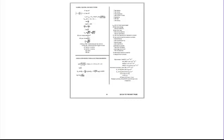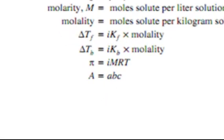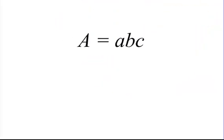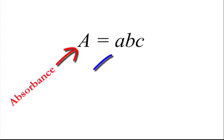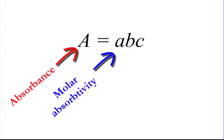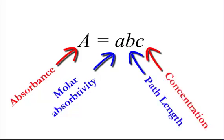Anytime you're doing a Beer's Law type problem, go to your equation sheet — specifically the gases, liquids, and solutions section — and zero in on the equation at the bottom: A = abc. Capital A stands for absorbance, little a stands for molar absorptivity, B stands for path length, and C stands for concentration of your solution.